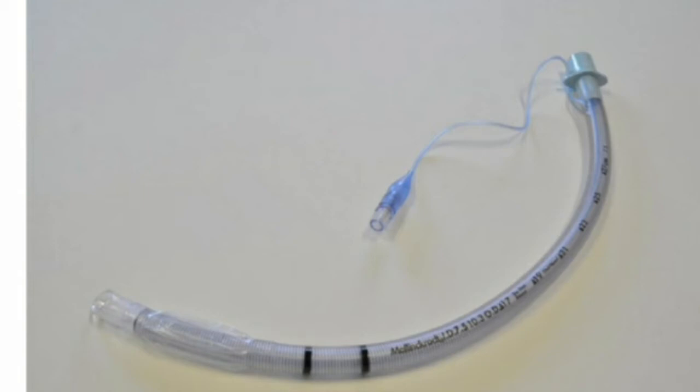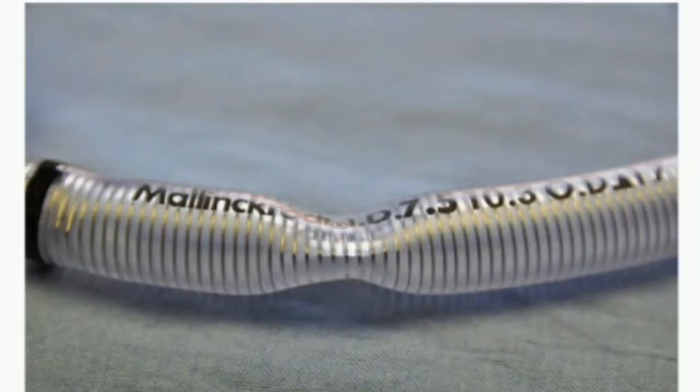Although armored tubes are less likely to occlude through bending because of the wire coil reinforcement, they are not a substitute for a bite block. While it is significantly more difficult for a patient to totally occlude an armored tube compared to a regular tube by biting onto it, the armored tube has the disadvantage of having a memory, meaning it won't expand back to a round diameter once the bite is released, significantly increasing resistance to airflow.